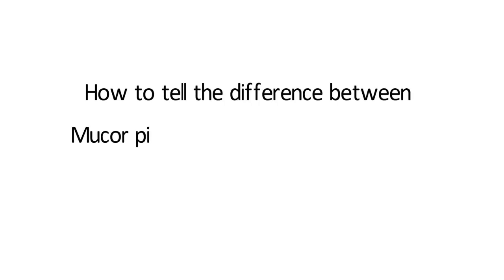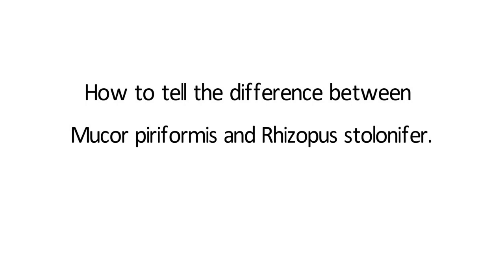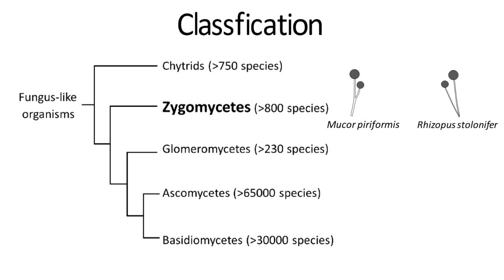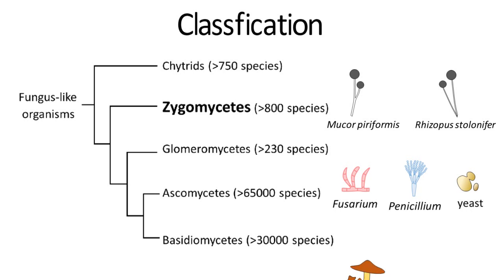Today I'm going to talk about how to tell the difference between Mucor piliformis and Rhizopus stolonifer. According to the classification of fungus-like organisms, Mucor piliformis and Rhizopus stolonifer belong to the group called Zygomycetes, which is different from Ascomycetes or Basidiomycetes, that include Fusarium, Penicillium, and yeast, or most mushrooms, respectively.